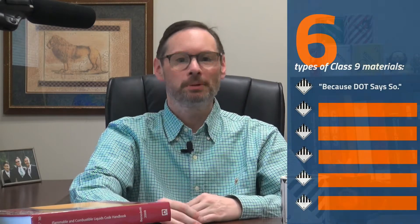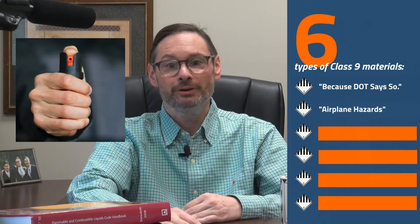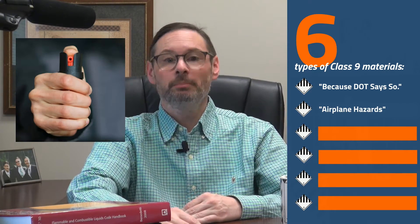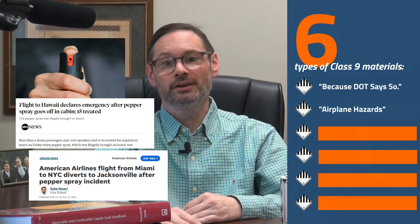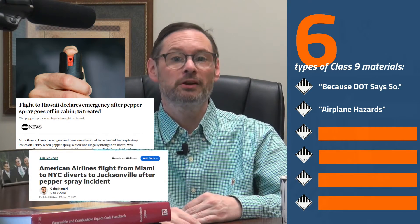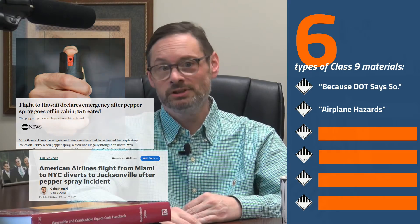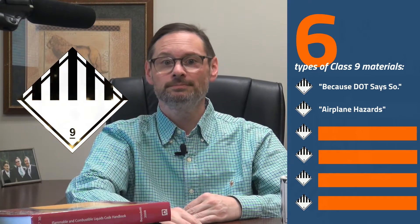The second type of Class 9 are what we can call airplane hazards. Take something like self-defense spray — that may not be regulated as hazmat when shipped by ground, but when released on board an aircraft, can cause a serious situation and even an emergency. So when shipped by air, these are Class 9s.